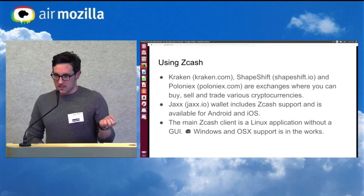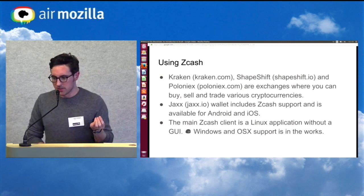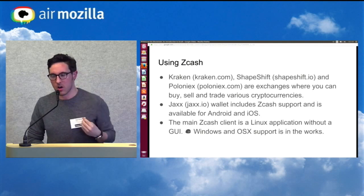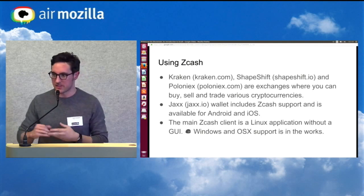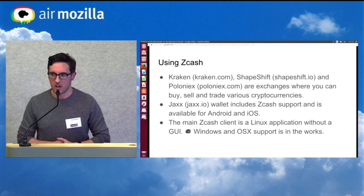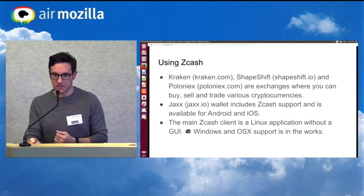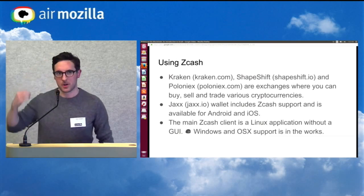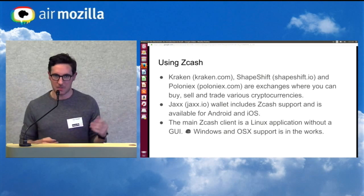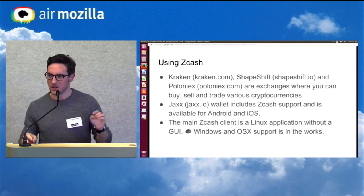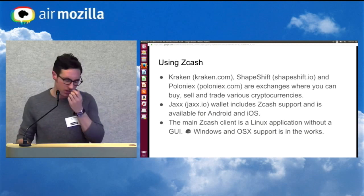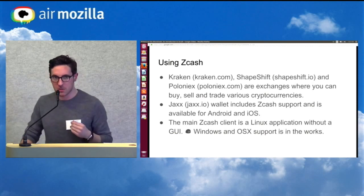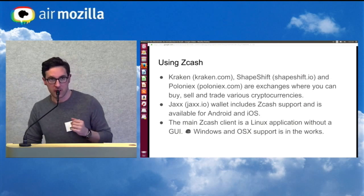If you're interested in getting started with Zcash, there are a couple exchanges: Kraken.com, Shapeshift.io, and Poloniex all have Zcash support — you can buy, sell, and trade various cryptocurrencies on those sites. If you want a good user-friendly Zcash experience, the Jaxx wallet, available for iOS and Android, is probably the best way to go. However, the main Zcash client is still a Linux application without a GUI. Windows and OS X support is in the works, and there's a strong community of developers keen on making that happen.